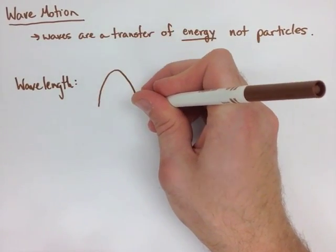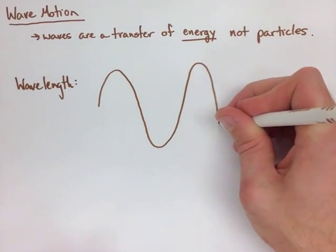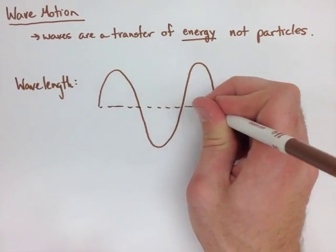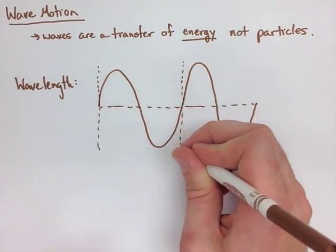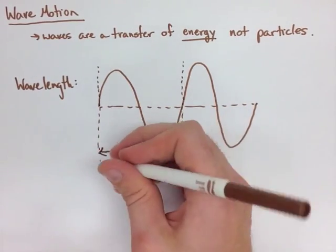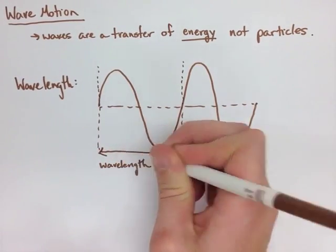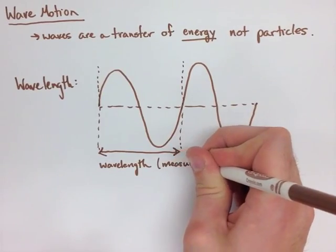When we're dealing with wavelength, we talked about this last year. It's from one spot to the next similar spot. A lot of the time you'll measure from the rest axis. Here we've shown that our wavelength is measured in meters.